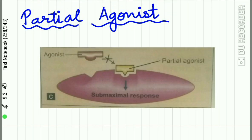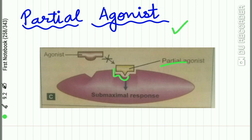A partial agonist and a full agonist both have affinity for the same receptor. The partial agonist competes with and antagonizes the full agonist because when the partial agonist binds to the receptor, it produces only a submaximal or partial response.